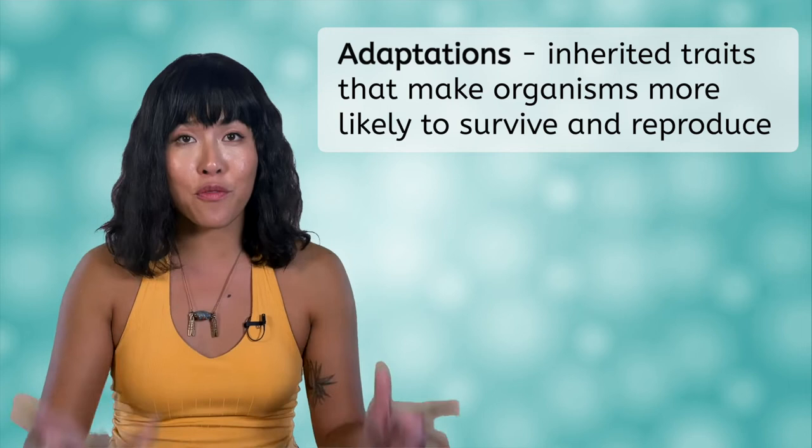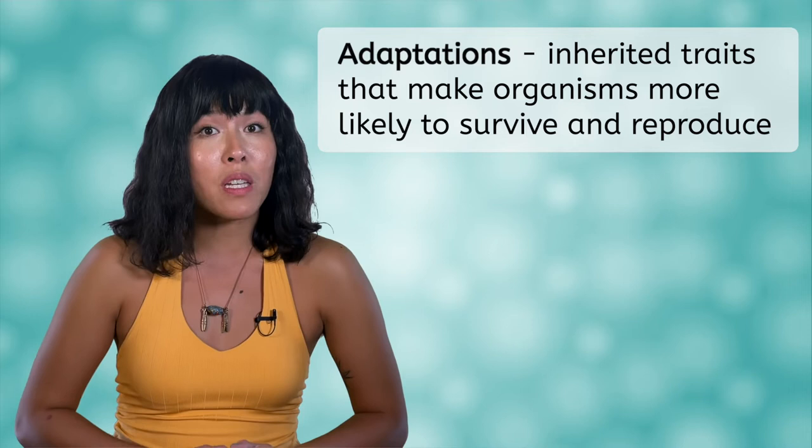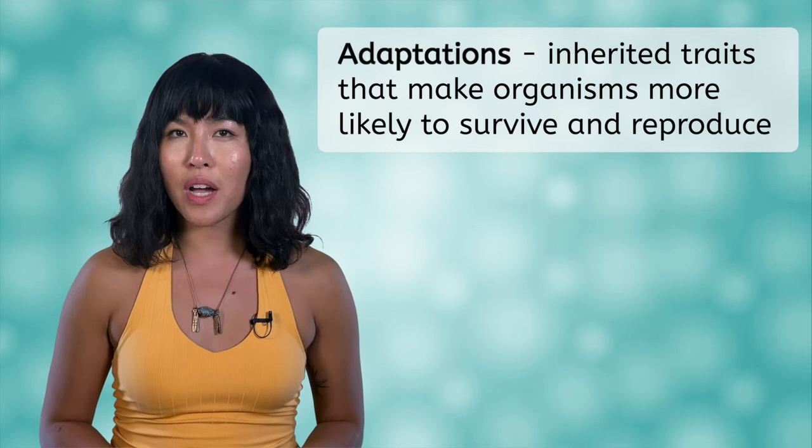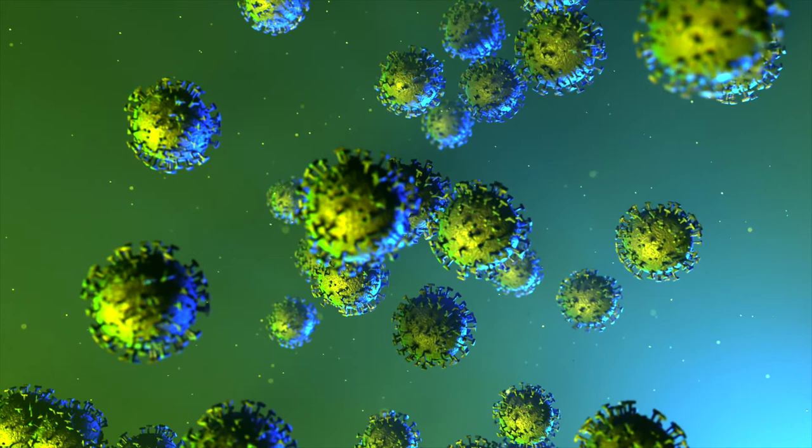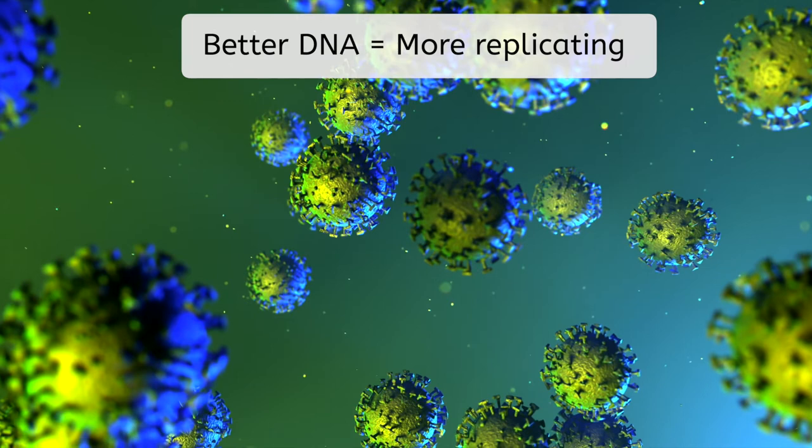Remember that adaptations are inherited traits that make an organism more likely to survive and reproduce, and the ability to adapt is our fourth criteria for life. In the case of a virus we could include being more likely to replicate since we don't use the word reproduce. Do viruses have adaptations? If the genetic makeup of a virus makes it successful at replicating and infecting host cells, it is more likely to continue infecting cells and being replicated.